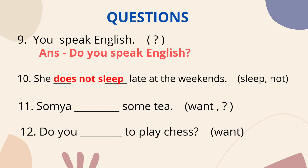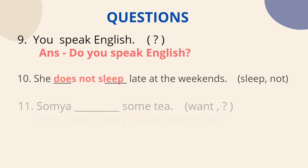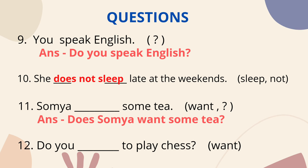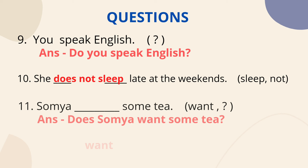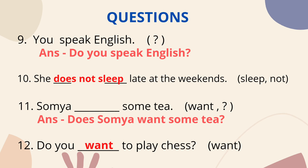Question no.11: by now you should understand easily. Put the main verb 'want' and frame an interrogative sentence. Answer: 'Does Somya want some tea?' — question mark added because it's interrogative. Question no.12: same format. Answer: 'Do you want to play chess?' — interrogative question, so question mark is added.